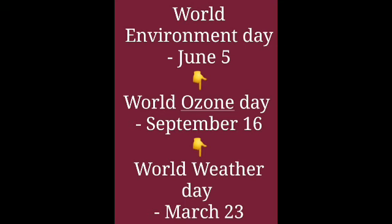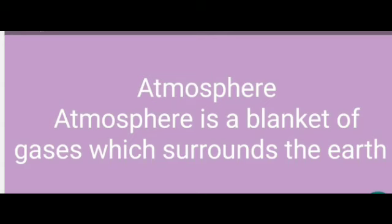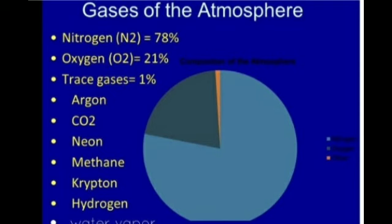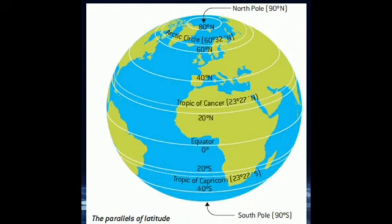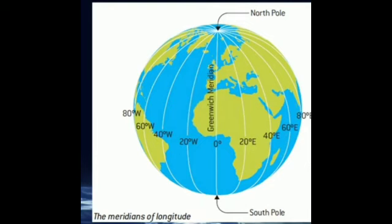Now we have come to the end of this unit, so let's have a small recap of the whole unit. First, we saw about the atmosphere — atmosphere is the blanket of gases which surrounds the earth. Next, we saw about the gases present in air: different types like carbon dioxide, nitrogen, ozone, etc. Next, we saw about latitudes and longitudes — imaginary lines drawn horizontally are called latitudes, and imaginary lines drawn vertically are called longitudes.